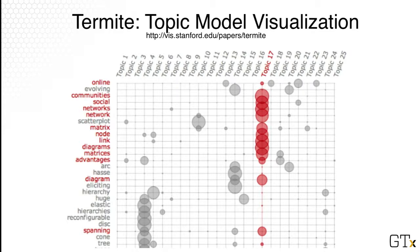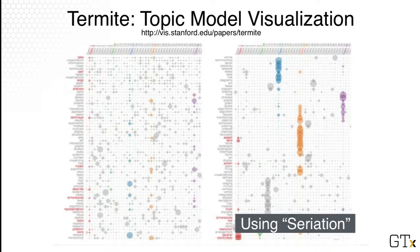You've seen this example before — the termite system. This is a canonical way of visualizing documents and topics. Each word is a row and a topic is a column. You can imagine these columns are what you would get from SVD, and the cell values could be the values that SVD gives you — essentially saying, for example for topic 17, which words are most strongly associated with it. Whenever you visualize any kind of matrices, the ordering of rows and columns is important. On the left is without any ordering, and on the right is with ordering, something called seriation.